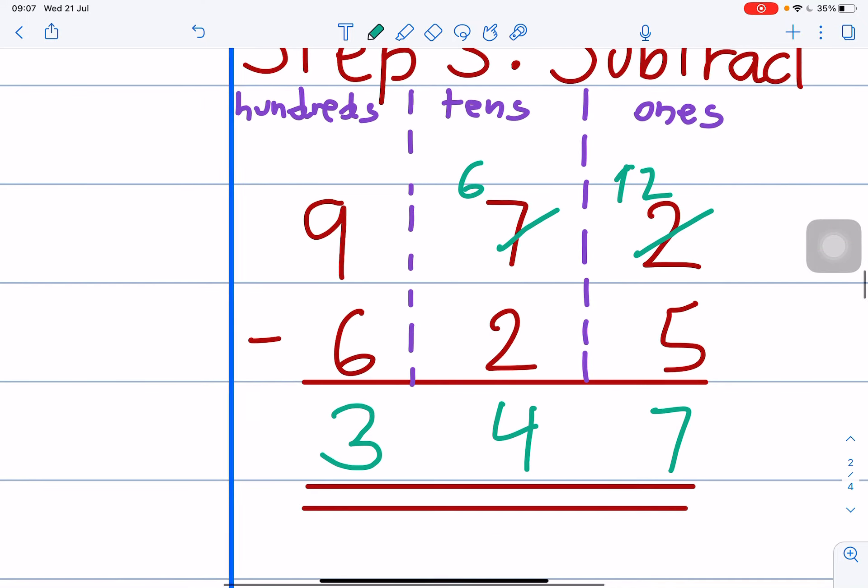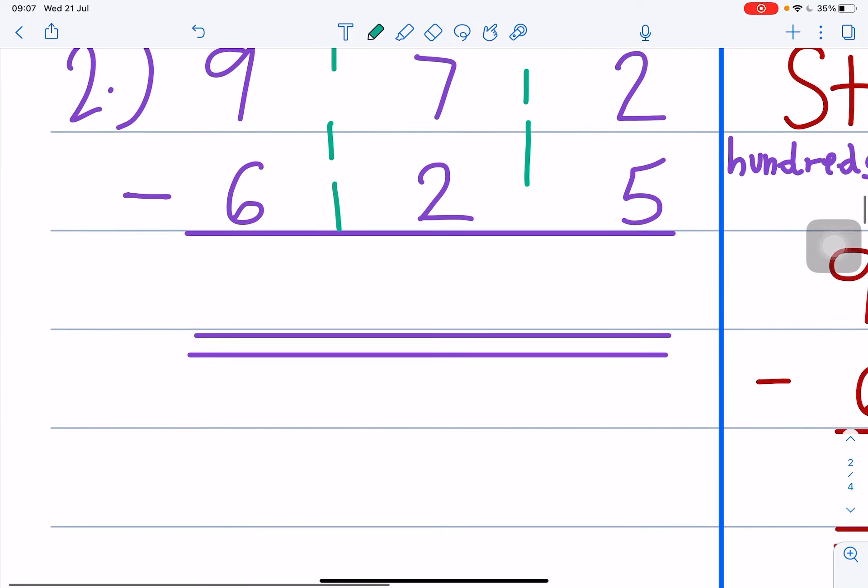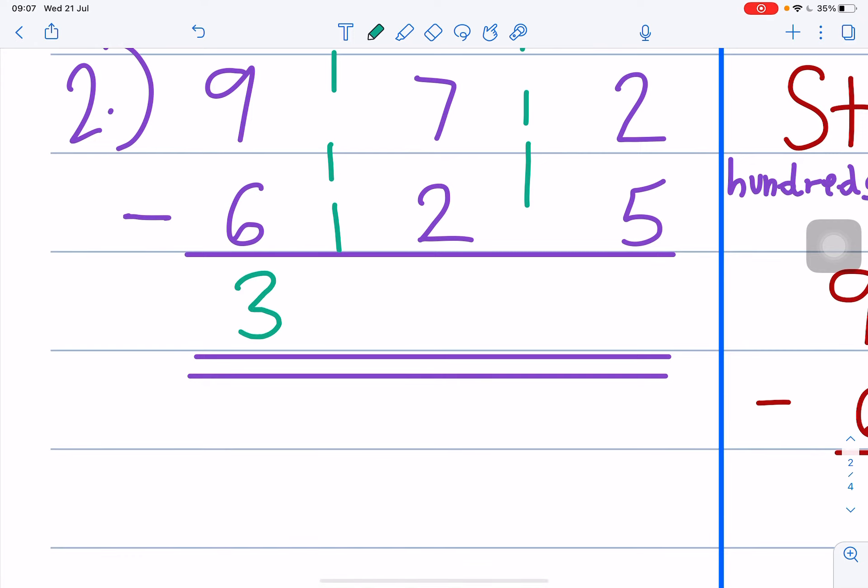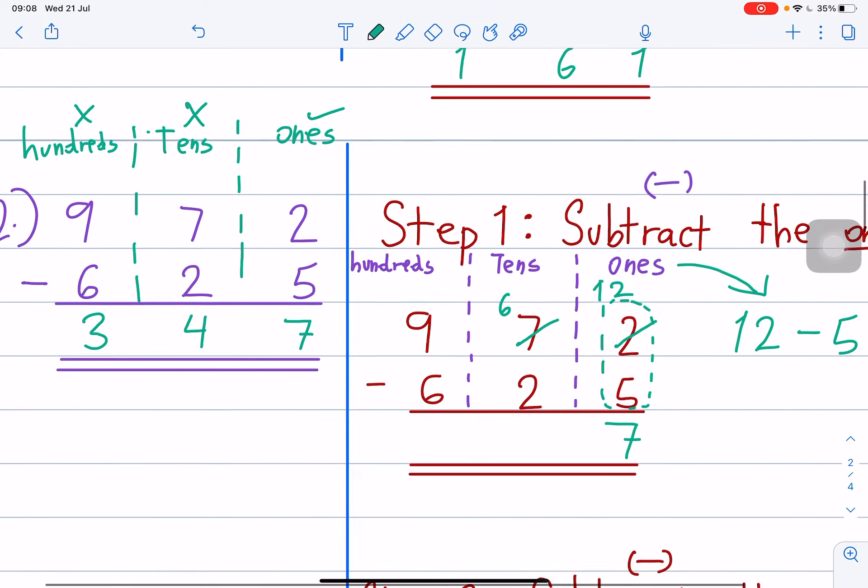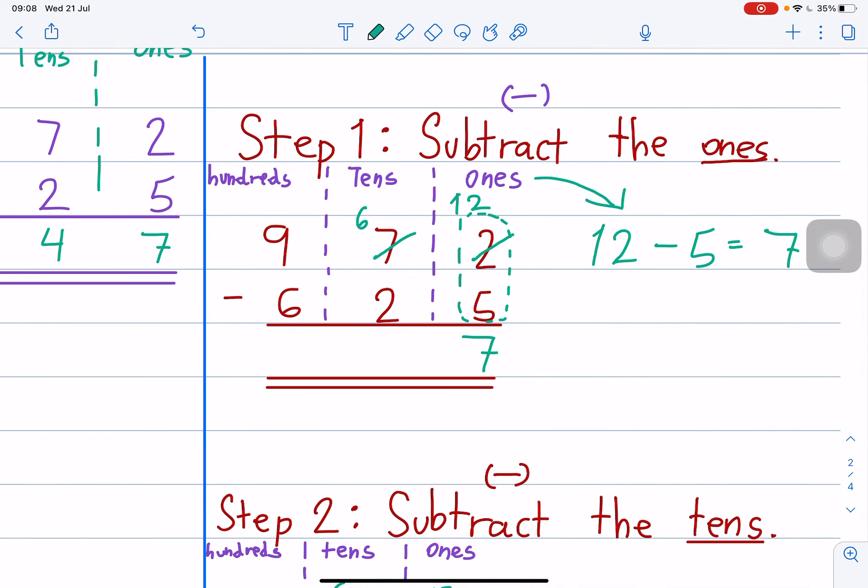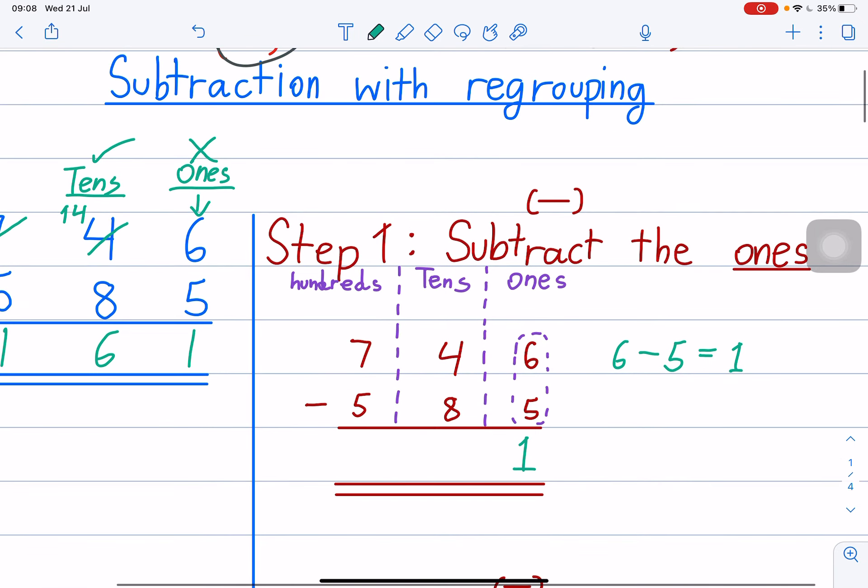Alright, students. So, I'll write the answer here for you. 347. Okay, students. So, this is how you do. This is how you must borrow. Number 1.